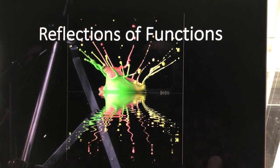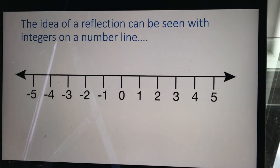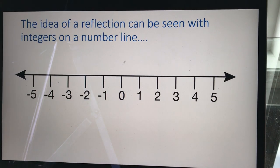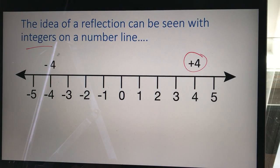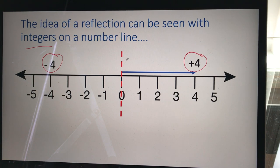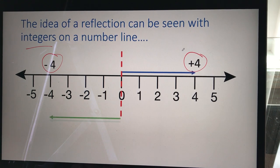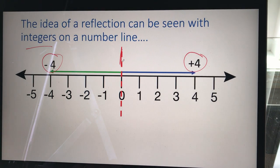Up next we have reflections of functions. The idea of a reflection can be seen with integers on a number line — it might be a little bit easier to see it this way initially. Here's our basic number line. Imagine we have a value, positive four. If I think of the number negative four, you can think of that essentially as a reflection.